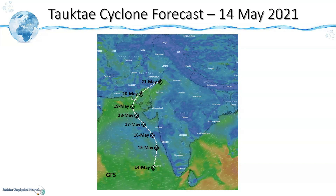According to the GFS model, this would be the track of the cyclone. As we can see, the cyclone will pass near Karachi on 20th May. On the other hand, according to the ECMWF forecast, the track of the cyclone from 14th to 16th May matches that of the GFS track, but from then onwards it follows a different path where it will pass over the Indian state of Gujarat. As has been mentioned, the forecast changes as more data comes in.